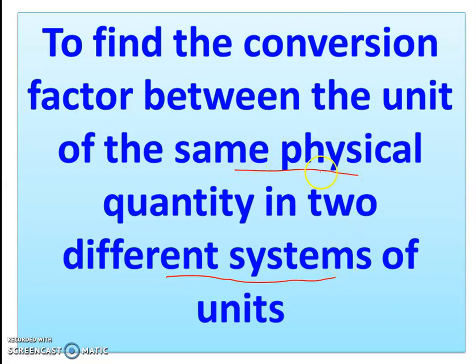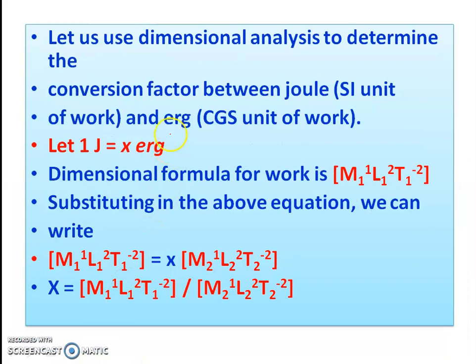The same physical quantity we use in two different units. We have seen the conversion factor between Joule, SI system, this is the unit of work. CGS is the unit of work. The physical quantity is the same as work. The work's SI unit is Joule, the CGS unit is erg. We have seen the conversion factor.